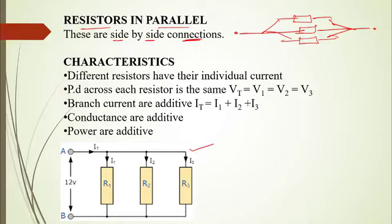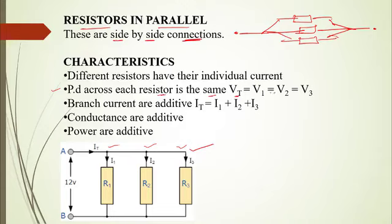Looking at the parallel diagram, you notice that the different resistors have their individual currents. When resistors were connected in series, the same current flowed through each one. But for resistors connected in parallel, it is not the same current that flows through each — each resistor has its own individual current. When it comes to potential difference in parallel, the PD across each resistor is the same. So the total potential difference equals V1 = V2 = V3.